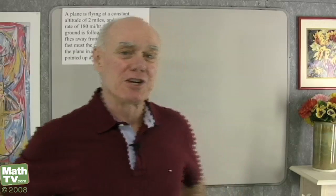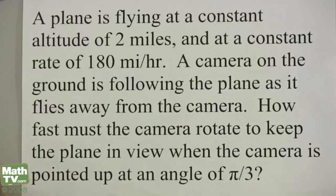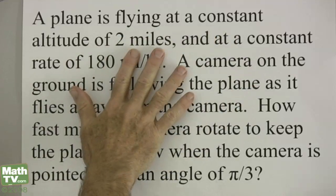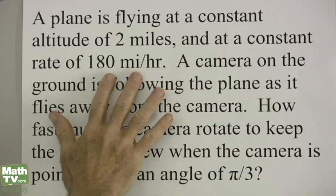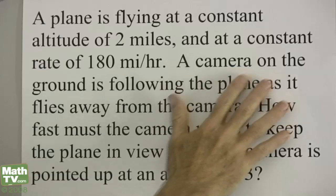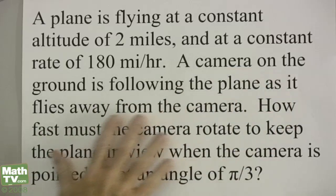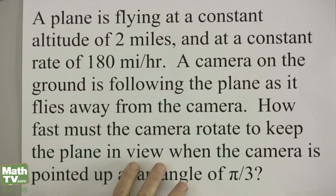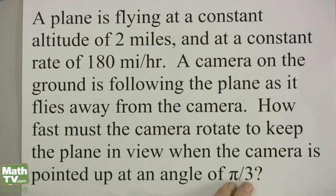Let's do another related rate problem. A plane is flying at a constant altitude of 2 miles and at a constant rate of 180 miles per hour. A camera on the ground is following the plane as it flies away from the camera. How fast must the camera rotate to keep the plane in view when the camera is pointed up at an angle of pi over 3 radians?